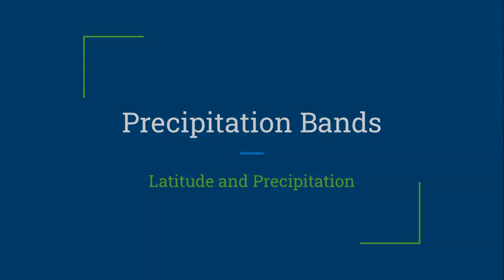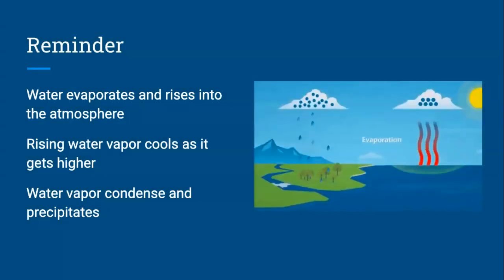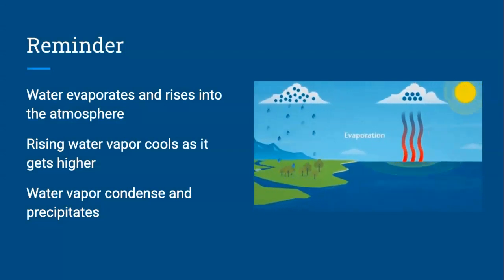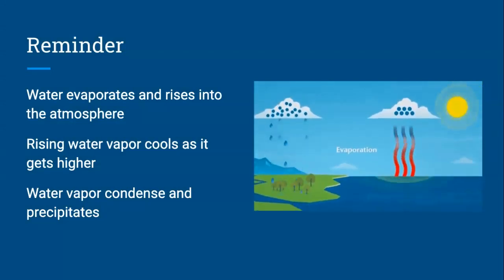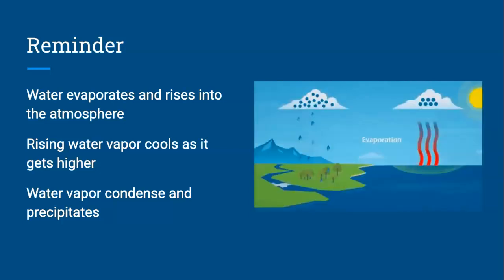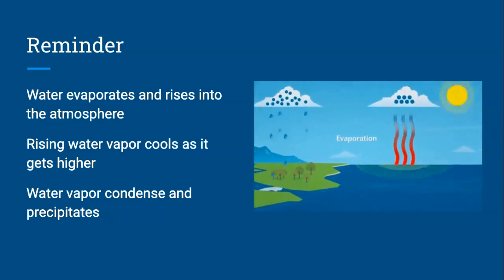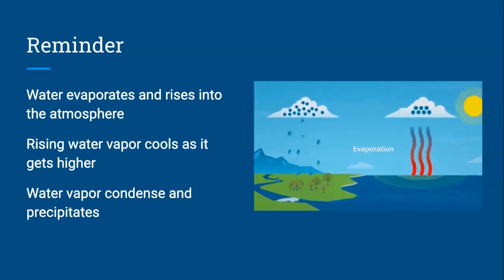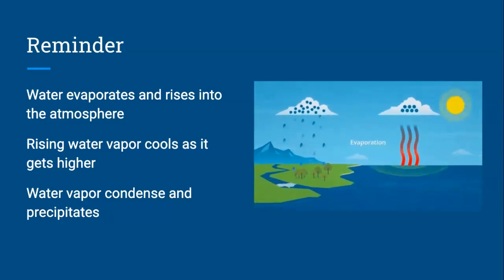Precipitation Bands. First, a reminder. Remember that as water heats up, it evaporates and rises into the atmosphere. And as it gets higher in the atmosphere, it starts to cool. And that cooling water vapor then condenses and precipitates.